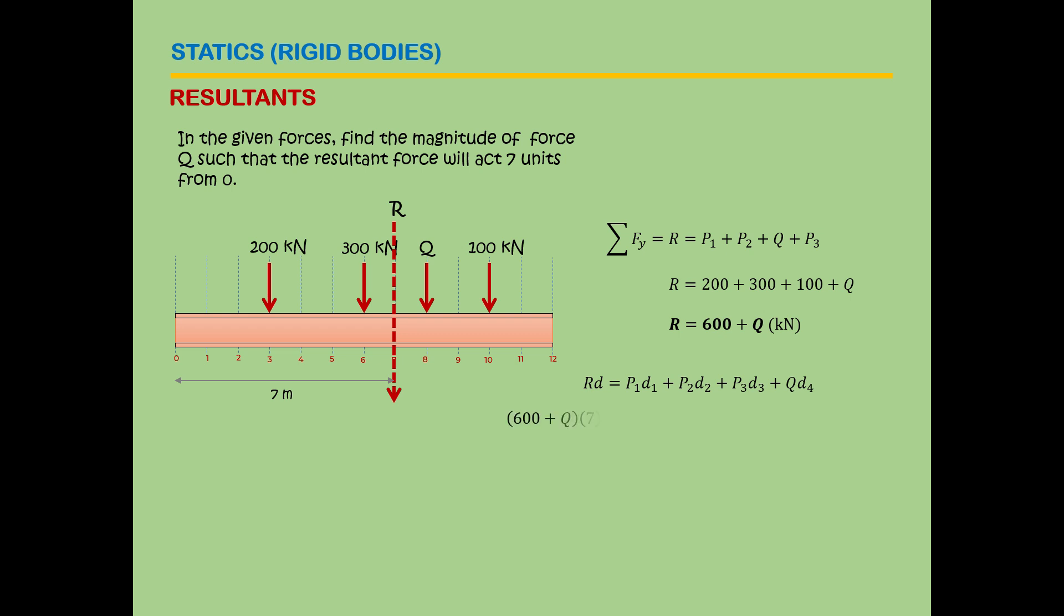So replace the value of your R. The value of your R is 600 plus Q. So 600 plus Q multiplied by the distance of 7, and then 200 multiplied by 3 because that's the distance, 300 times 6, similarly zero to this point, and then 100 and 10 meters or 10 units. And Q, that is 8 units.